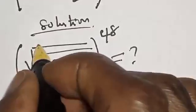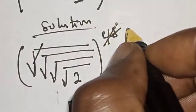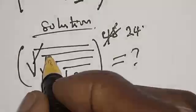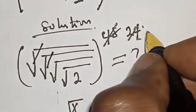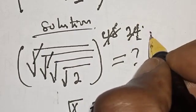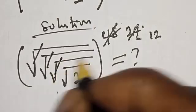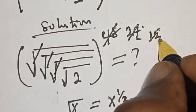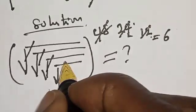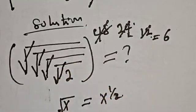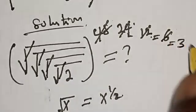So this one will cancel, and this is divided by this — this is 24. Now if you cancel this, then this divided by 2, we have 12. Now if you cancel this, this divided by 2, we have 6.